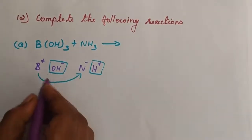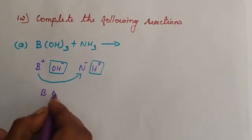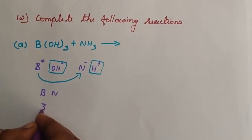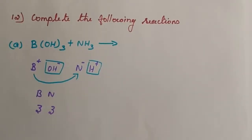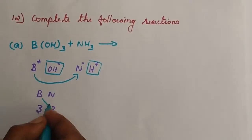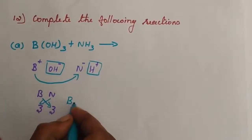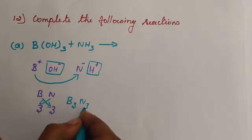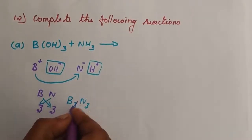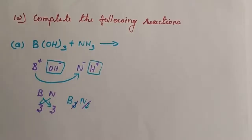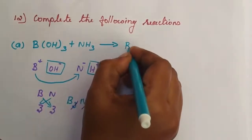Valency substitution: B and N combine. Boron has valence 3 and nitrogen has valence 3. We cross-multiply: B3 and N3 — since both are 3, they cancel. The product is BN. This is the first product.